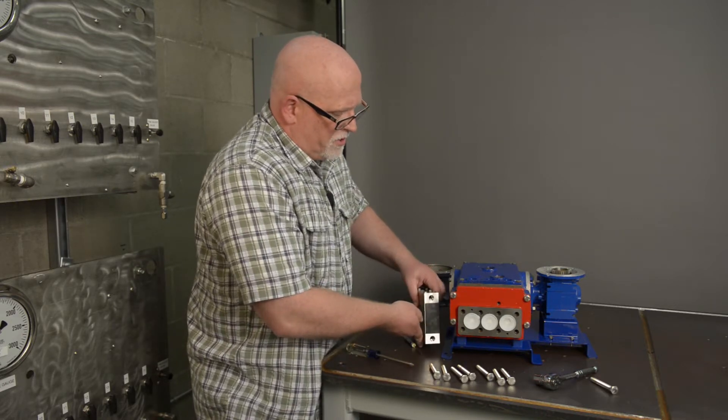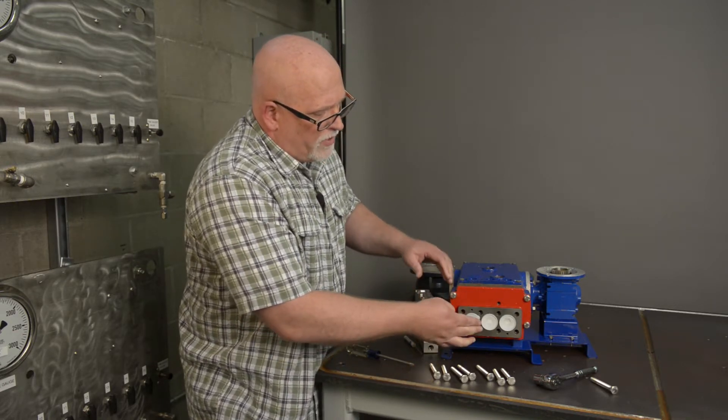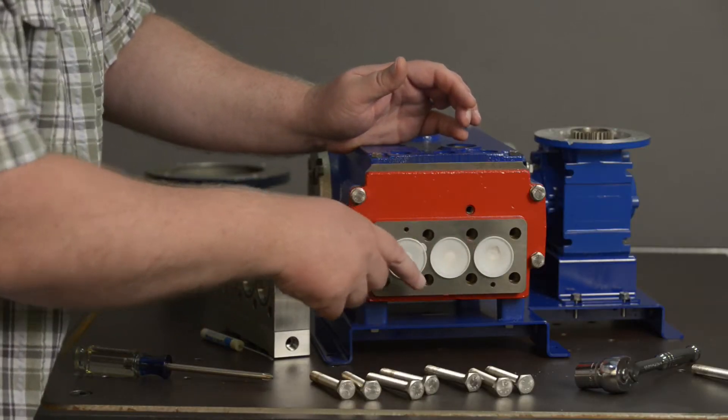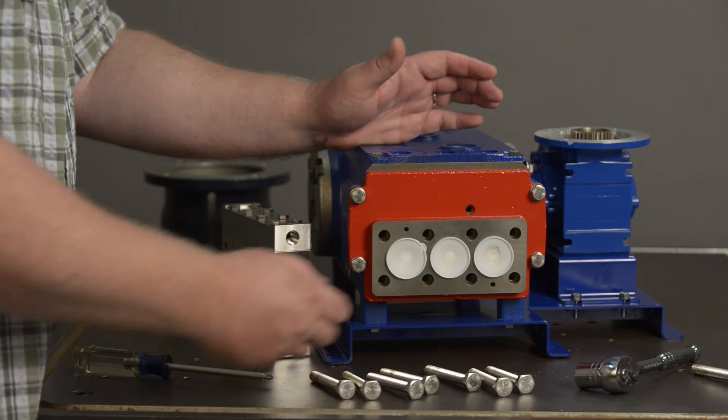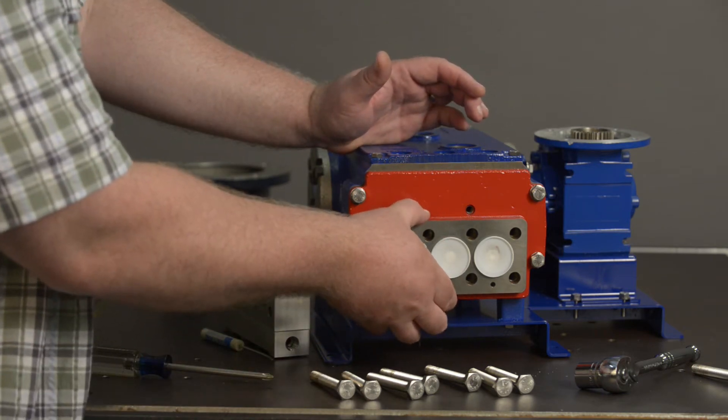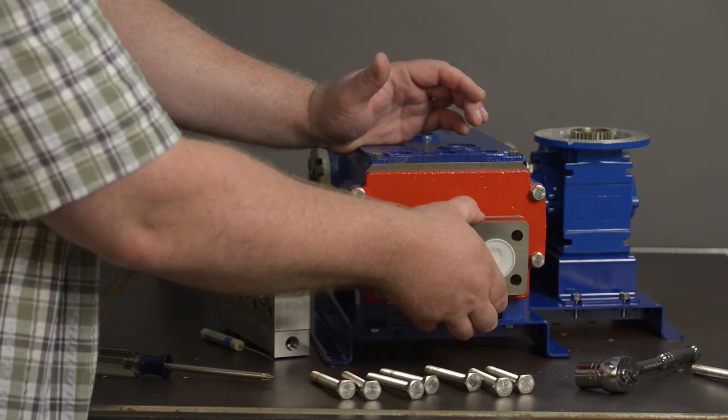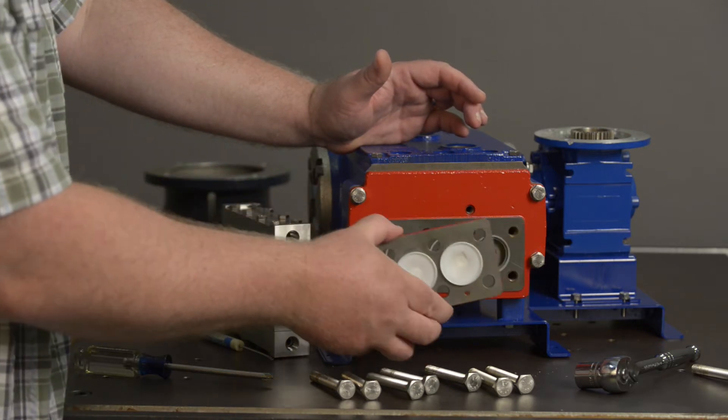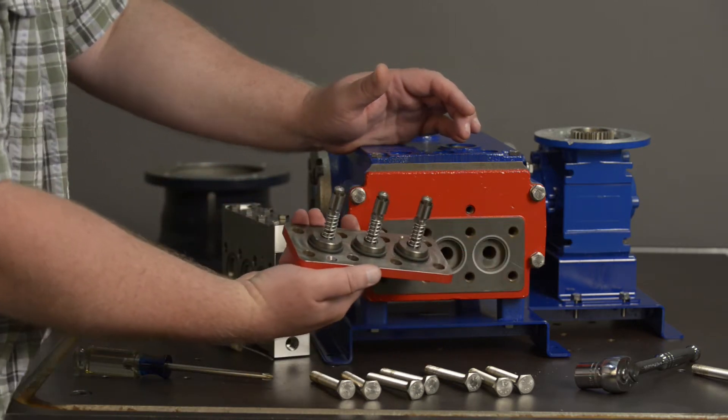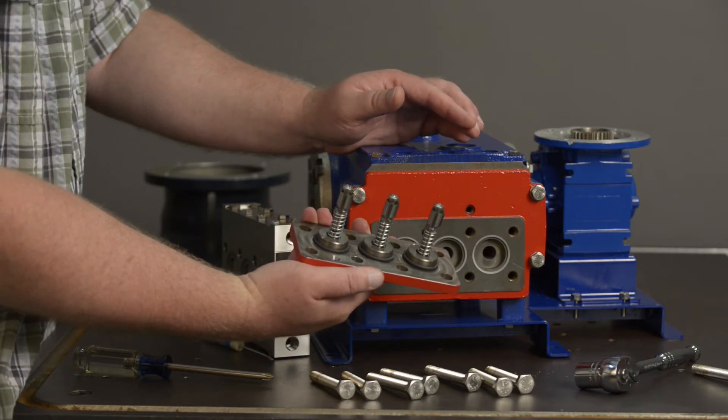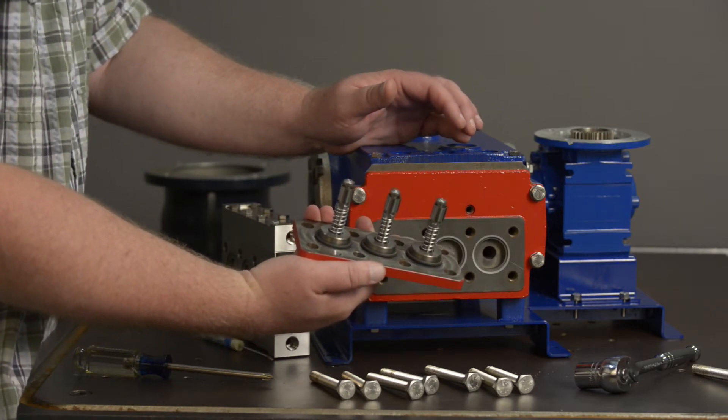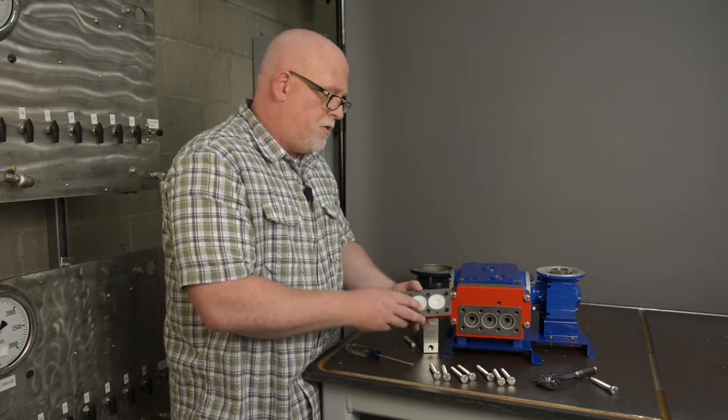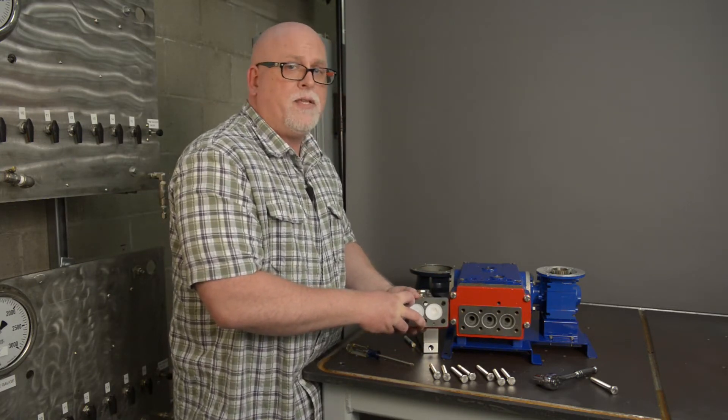Now this exposes the diaphragms as you can see. We have three diaphragms that are exposed. You remove the diaphragm plate simply by pulling it out and it exposes the diaphragms and the spool valve assembly on the back side of the diaphragm. This is all you will need to do in order to replace these diaphragms.